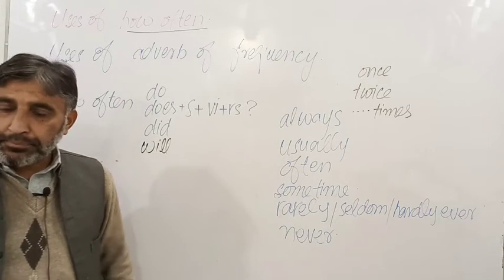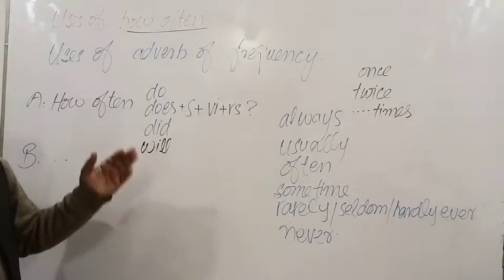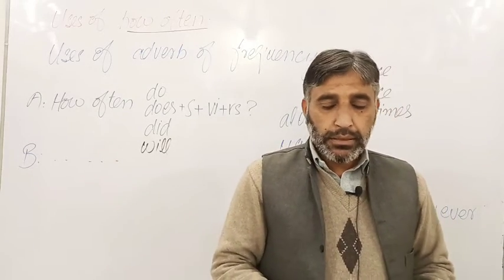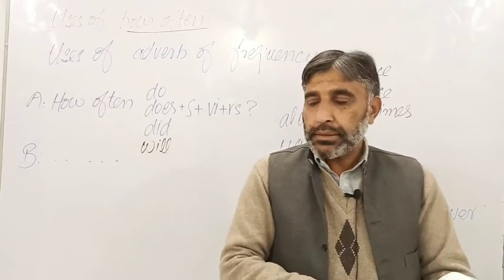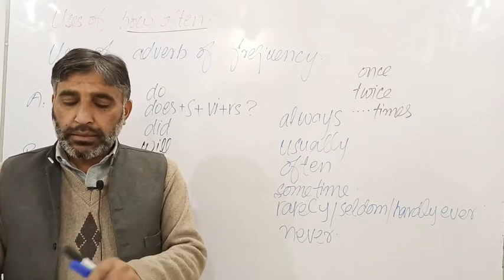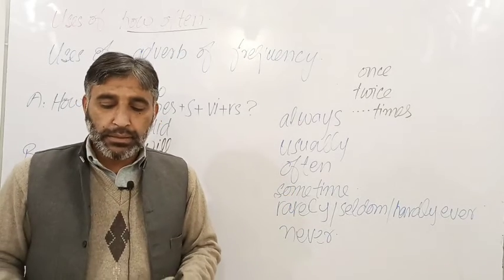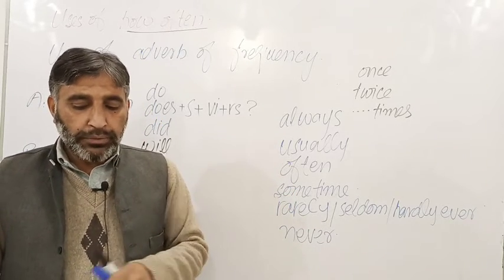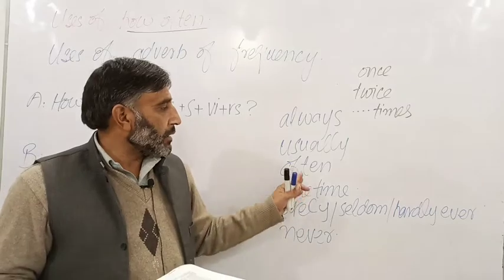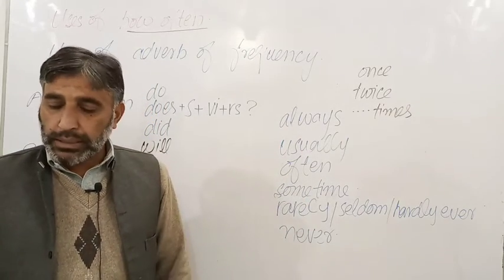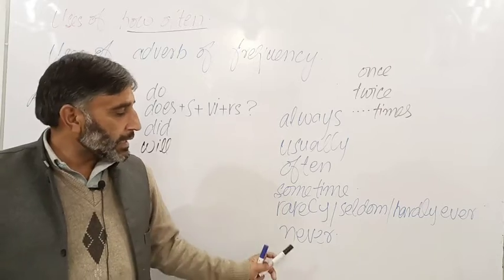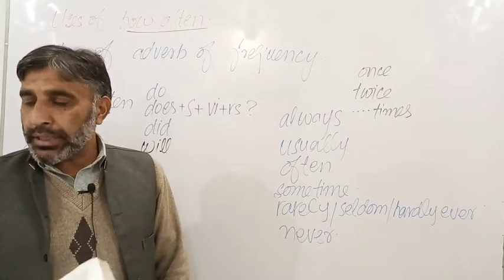For the first activity — watch television: 'How often do you watch television?' — 'I rarely watch television.' For me: sometimes. For Umar: rarely. For Fatima: often — 'I often watch television.' For the second activity — go to the movies: 'How often do you go to the movies?' — 'I never go to the movies.' Umar also never goes, so we write 'never.'